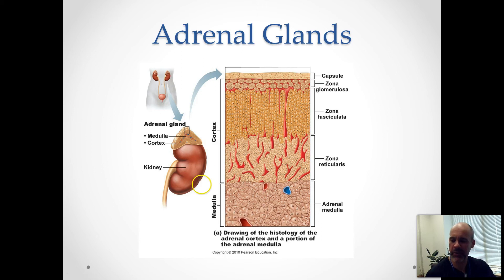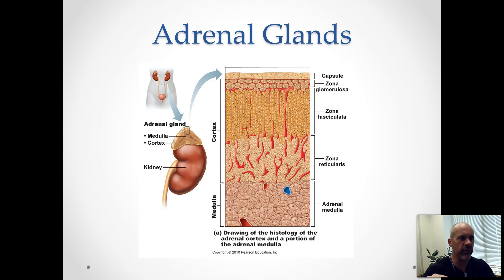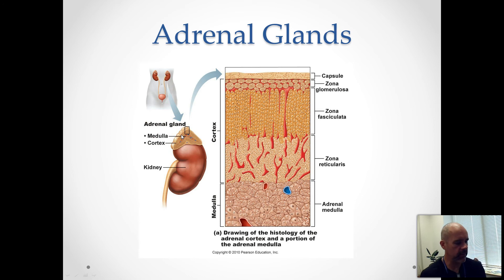We're going to continue on with the endocrine anatomy, and we're moving on to the adrenal glands. Your adrenal glands are sitting on top of each kidney.